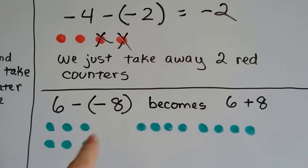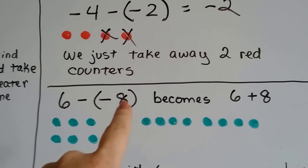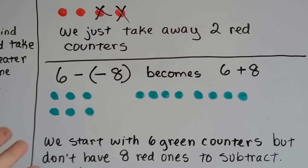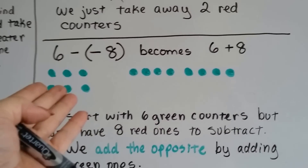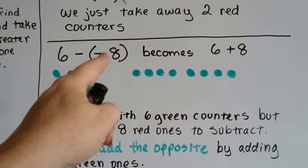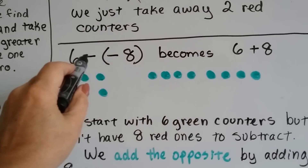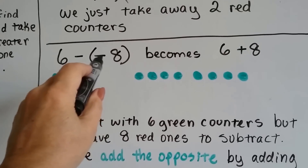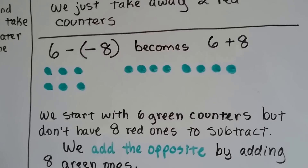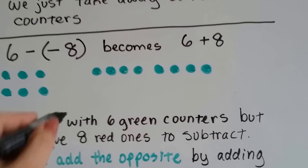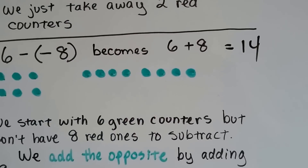Now if we have six green ones — six positive ones — and we want to take away eight red ones, we don't have eight red ones. There's no red ones to take away. It says take away eight red ones from this. Well, if we add the opposite, this minus sign becomes a plus sign and that becomes a plus 8, and we get 6 plus 8. So we can just add eight green counters and now we've got 14 green counters.